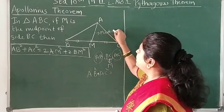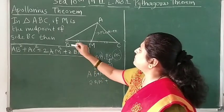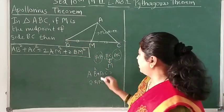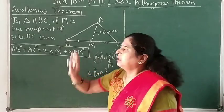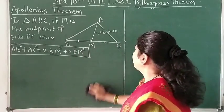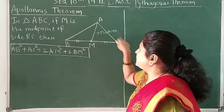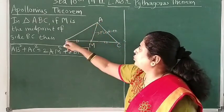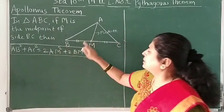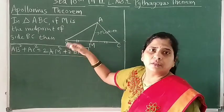So, 2 times AM square is 2 times the median square, and its sum with 2 times BM square. What is BM? BM is half of the side whose midpoint we have taken. So it is 2 times BM square. This is the property derived by Apollonius and we are going to first prove it. You have to understand: M is the midpoint of side BC of triangle ABC, then sum of the squares of the two remaining sides equals 2 times the median square plus 2 times half the side square.